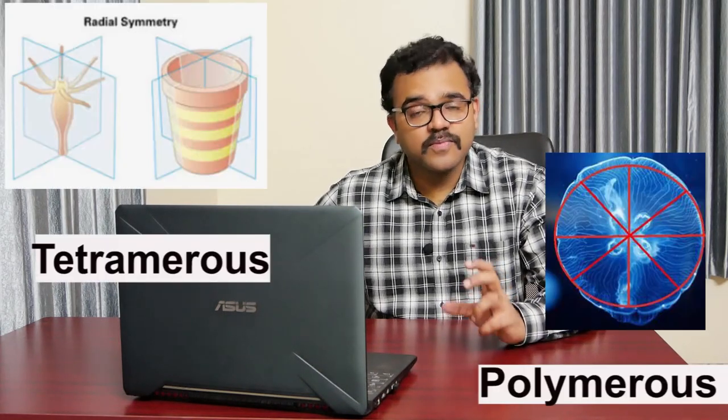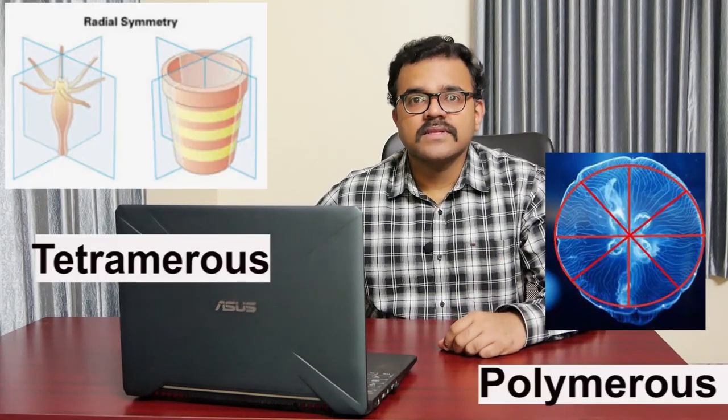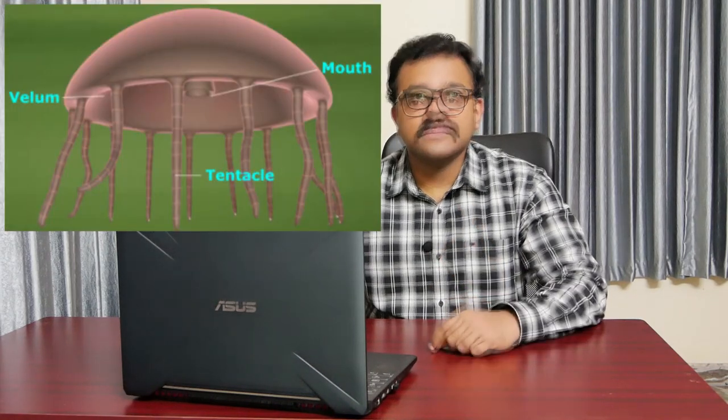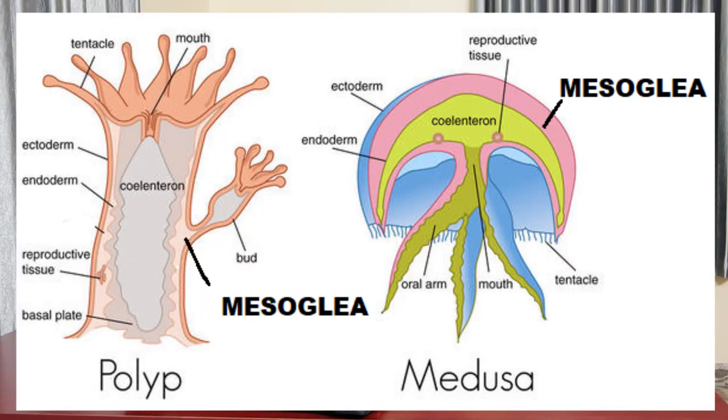They exhibit tetramerous or polymerous radial symmetry. Many hydrozoans exhibit a regular alternation of generation — that is, polyp and medusoid forms alternate in the life cycle of an organism. The medusa form is found to possess a true velum, and the body wall has two cell layers with a middle noncellular mesoglea and an outer layer of noncellular perisarc secreted by the ectoderm.